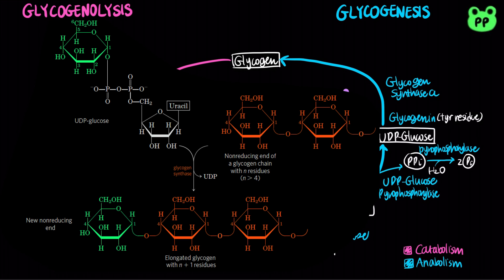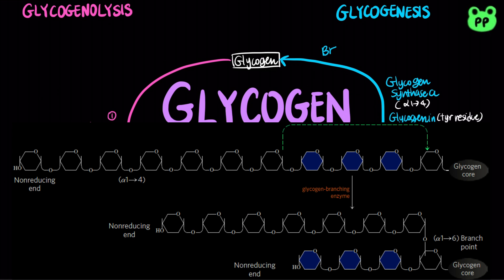Glycogen synthase cannot make the alpha-1,2,6 bonds found at the branch points of glycogen. These are formed by the glycogen branching enzyme, which catalyzes the transfer of a terminal fragment of 6 to 7 glucose residues from the non-reducing end of a glycogen branch to the carbon-6-hydroxyl group of a glucose residue at a more interior position of the glycogen chain. Branching makes the glycogen molecule more soluble and increases the sites accessible to glycogen phosphorylase and glycogen synthase.